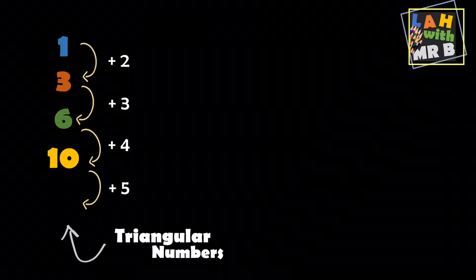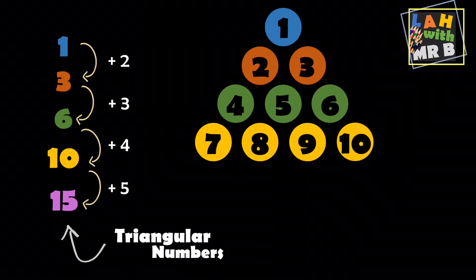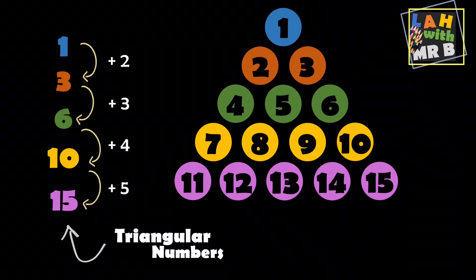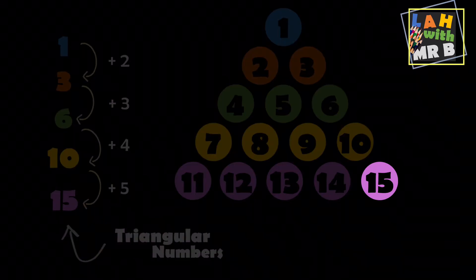So what are we going to add next? We're going to add five, which means the next triangular number is going to be five greater than ten — fifteen. Let's go back to our dots and make sure we've got this right. We add the next row of dots and count them up, and sure enough we need fifteen dots to make the next triangle.